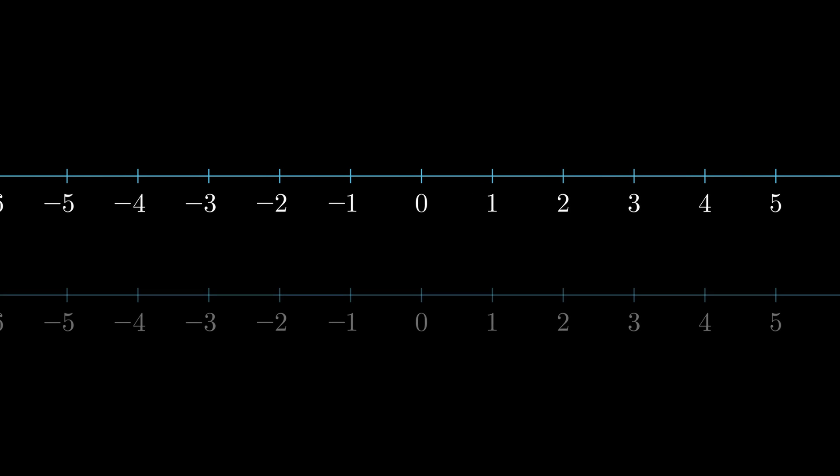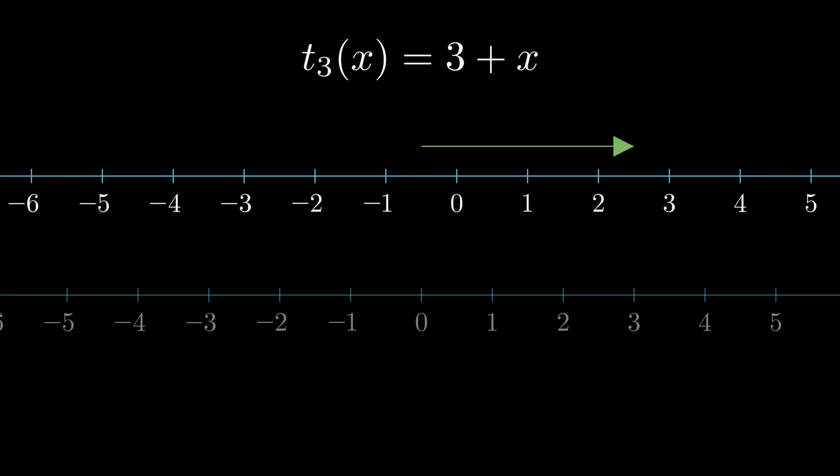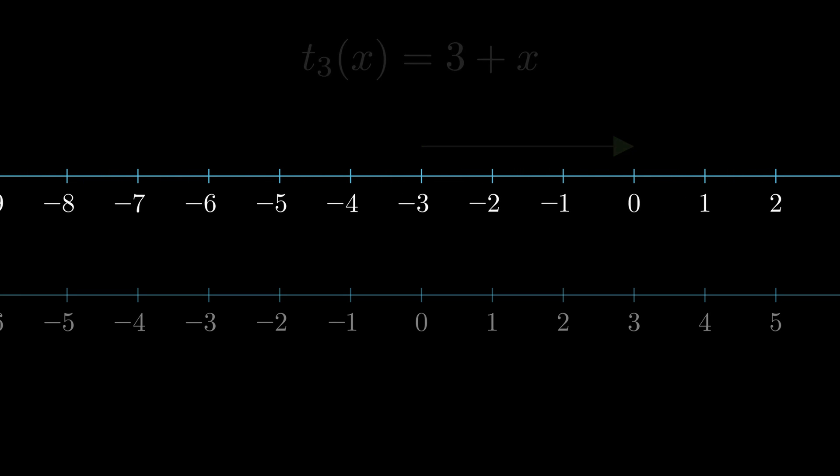In our case of R plus, the output we get is the set of translations on the real number line. With our earlier example of T3, it's the translations that move everything 3 to the right. Composition is the result of applying one transformation from the other. For example, composing T3 with T2 is T5.